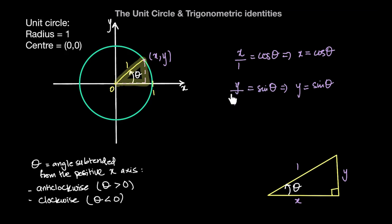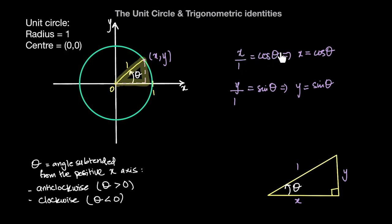So sine of theta equals y over 1, meaning the y coordinate equals sine of theta. And the x coordinate is the side adjacent to angle theta divided by the hypotenuse, which is x over 1, equal to cosine theta. So x is equal to cosine of theta.